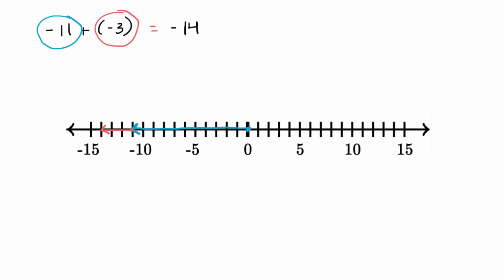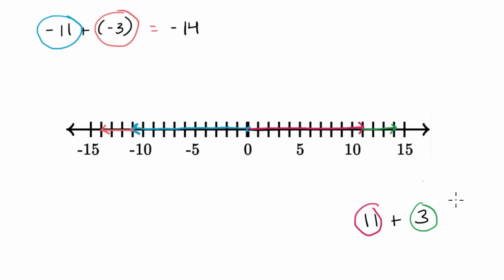Now let's do these in different orders, just to see what's going on. Let's do 11 plus three. We could start with positive 11 — that would look like that right over there. And then I am going to add three: one, two, three, and I get to positive 14. So notice — here I ended up 14 to the right of zero, and before I ended up 14 to the left of zero.